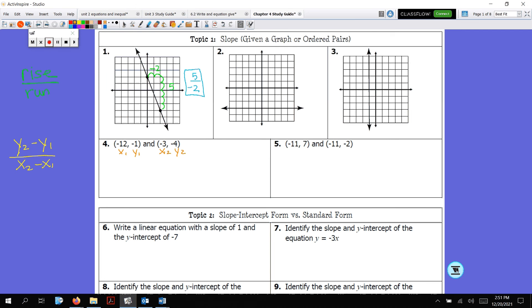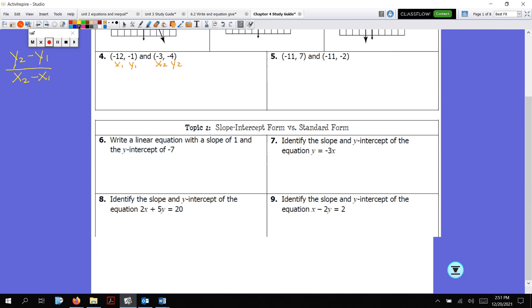For topic two, we are going to write equations in slope-intercept form. Slope-intercept form is y equals mx plus b. Standard form, on the other hand, is ax plus by equals c. In slope-intercept form, that's typically how we write equations of lines. Sometimes they give it to us in standard form, and we have to solve for y. The two things you need for slope-intercept form are the slope and the y-intercept.